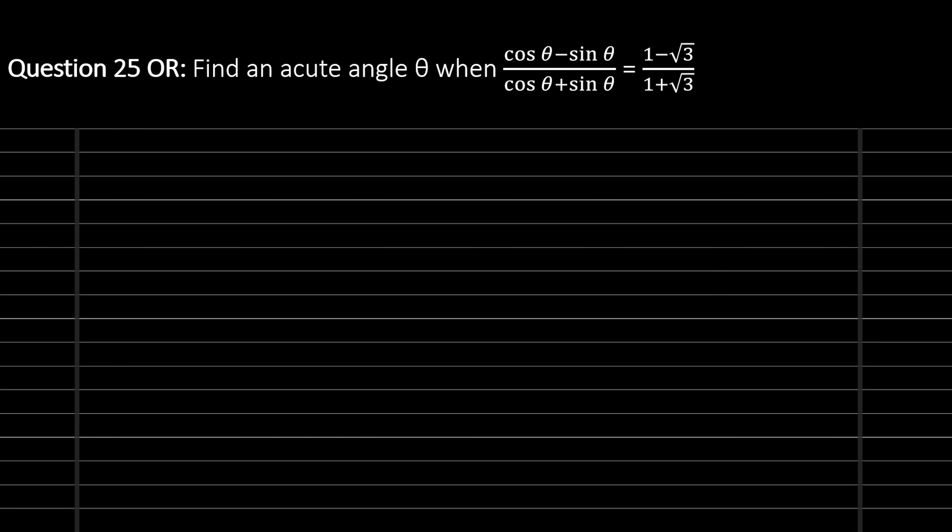This is question number 25: find an acute angle theta when (cos theta minus sine theta) upon (cos theta plus sine theta) is equal to (1 minus root 3) upon (1 plus root 3).